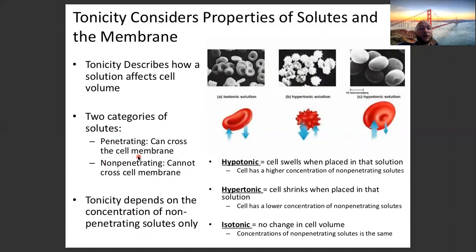In our problems, the only molecule we'll use that can cross the cell membrane is urea. Recall from part one: the smaller a molecule is, the more likely it is to move across a cell membrane; the more lipophilic a molecule is, the more likely it is to move across. Non-penetrating molecules — the larger and more polar they are — are less likely to cross. Urea is the only penetrating molecule in these problems; non-penetrating ones are different ions and glucose.